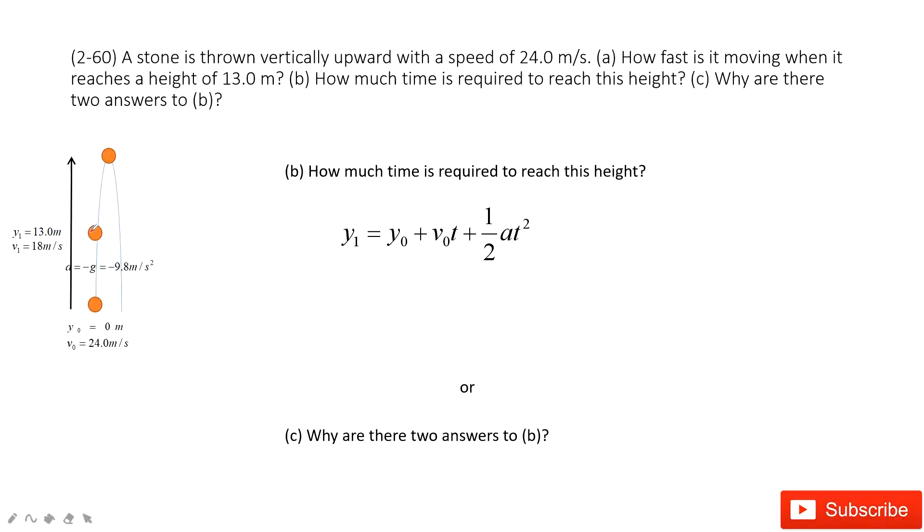We use the equation for displacement with time t. Because y0 is 0, it becomes V0t minus one-half g t squared. We input the numbers and solve for t.